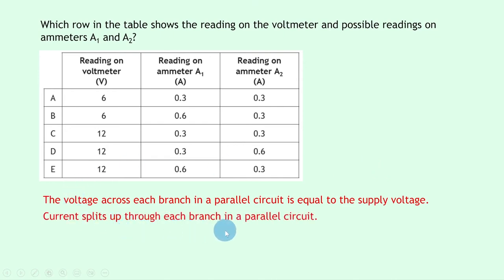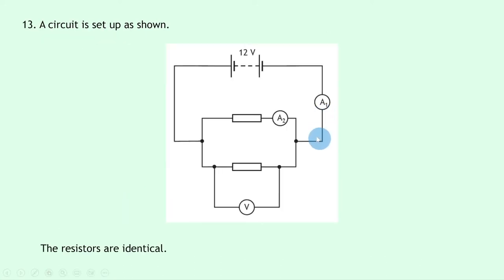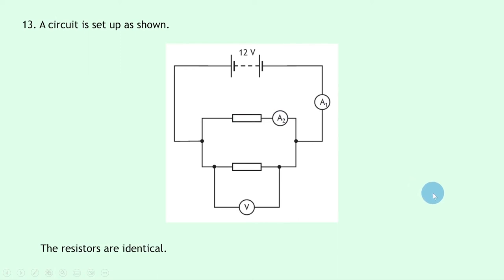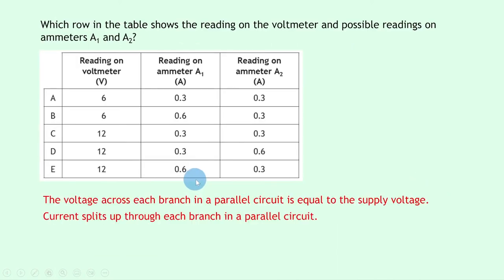Current splits through each branch in a parallel circuit, so A1 and A2 readings differ, ruling out option C. Ammeter A1 measures total battery current — the largest value. A2 measures current through one branch — smaller than A1. So A1 = 0.6 A and A2 = 0.3 A with voltmeter reading 12 V, giving answer E.